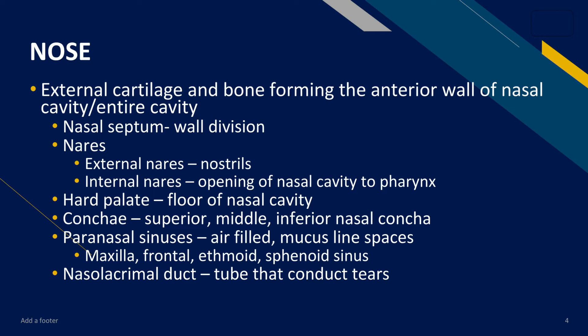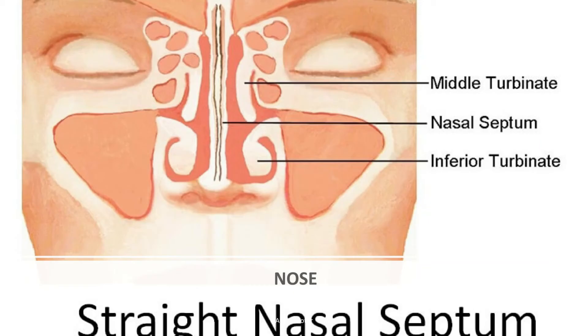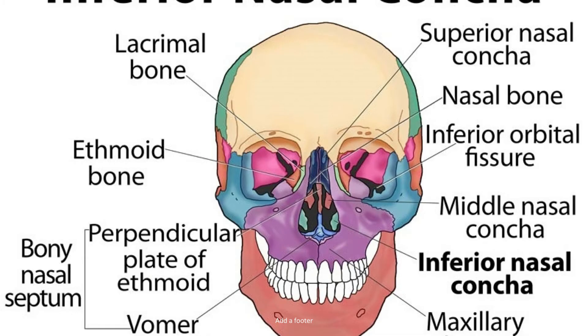We also have the paranasal sinuses, which are air-filled mucus-lined spaces within hollow organs or bones. The paranasal sinuses are divided into the maxillary, frontal, ethmoid, and sphenoid sinuses. Lastly, there is the nasolacrimal duct, which is the tube that conducts tears and is connected to very small openings in your eyes. This illustration shows the nasal septum, and as I mentioned, the concha is divided into superior, middle, and inferior nasal concha.